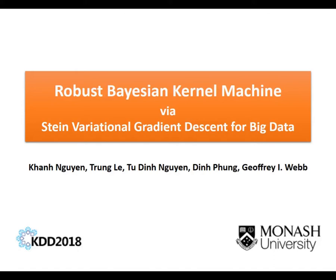Hi everyone, we are from Monash University. In this video we are going to talk about our paper accepted at KDD 2018 titled Robust Bayesian Kernel Machine via Stein Variational Gradient Descent for Big Data.